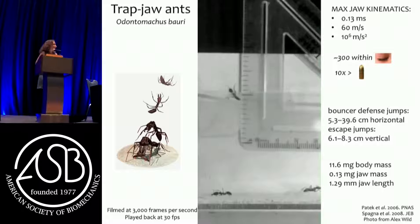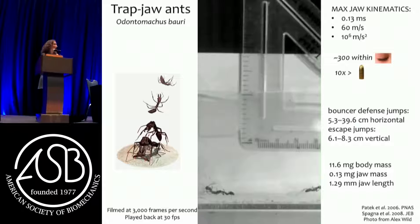They can go up to 40 times their body length, and this has evolved multiple times in ants. In their own habitat they grab onto something. It's an extremely powerful motion for both feeding and locomotion.